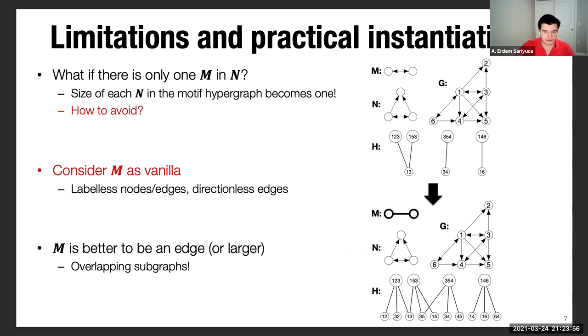In order to avoid this kind of hypergraphs, we always consider the small motif M as vanilla. In other words, we do not consider any labels on its nodes and edges, and we do not consider the directions on its edges. Same for the same graph, same large motif N. Now we do this vanilla motif M. With respect to that directionless edge, we construct the hyperedges and the nodes at the bottom, which now gives a non-trivial structure.